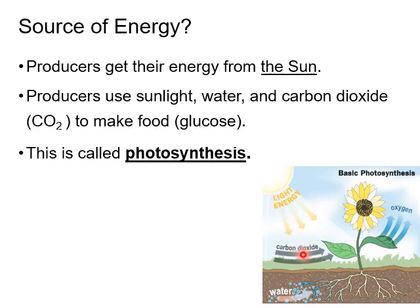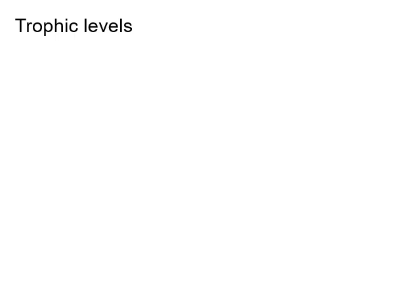Here's our diagram: sunlight comes in, carbon dioxide goes in, water goes in through the roots, and glucose is made and stored in the leaves — or in the roots if it's a potato, or in the stems. If you've ever tasted clover or watched bees go to flowers, that sweet nectar is another example of plants using their glucose. Photosynthesis produces glucose and oxygen as a byproduct.